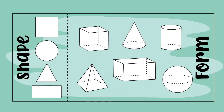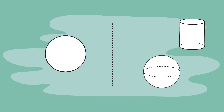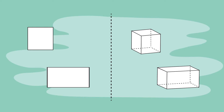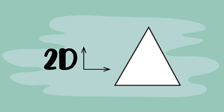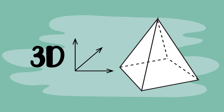When shapes get the third dimension of depth, they become forms. When given a form, circles become spheres, squares become cubes, triangles become cones or pyramids. So the difference between shape and form is that shape is 2D and form is 3D.